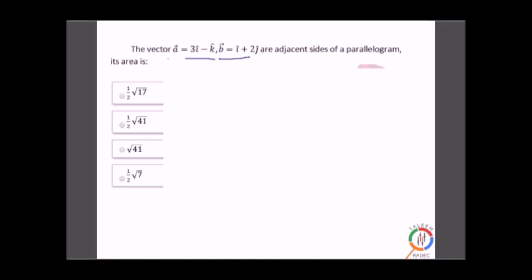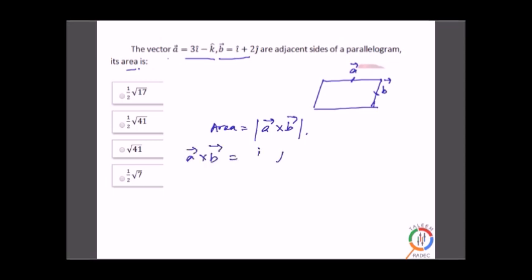Next: vectors a and b are adjacent sides of a parallelogram — find its area. We have a parallelogram whose two adjacent sides are represented by vectors a and b. If a and b are the two adjacent sides of a parallelogram, then the area is the magnitude of the cross product |a × b|. To find the cross product we use the i j k determinant with the given values: (3, 0, -1) and (1, 2, 0). Let's solve that.